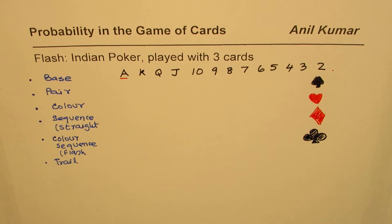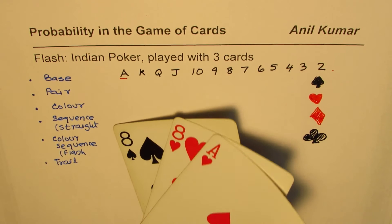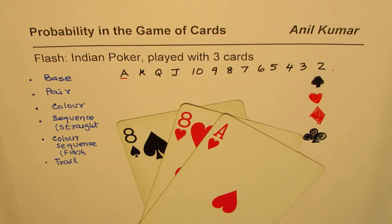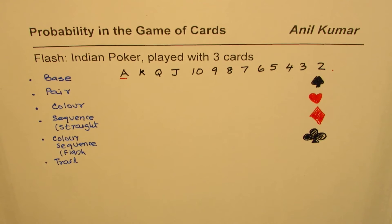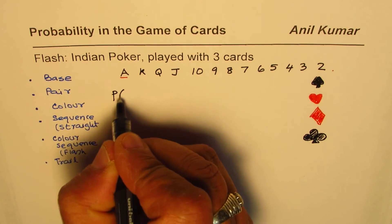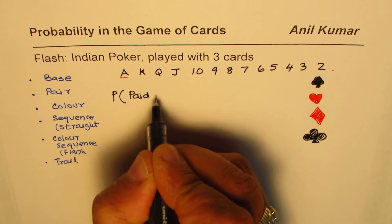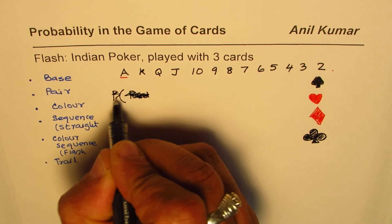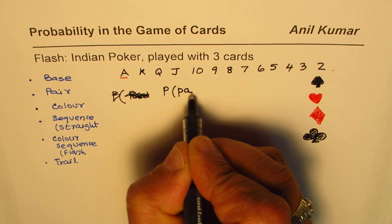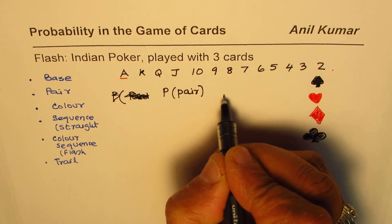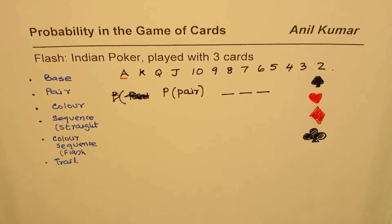A pair means you get two cards of the same value. For example, two eights — the third card is different. In this video we will try to understand what is the probability of getting a pair when three cards are distributed.